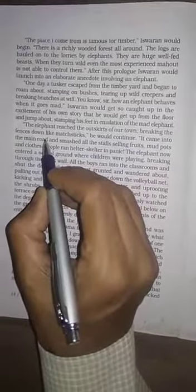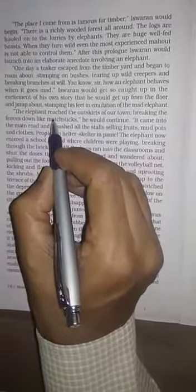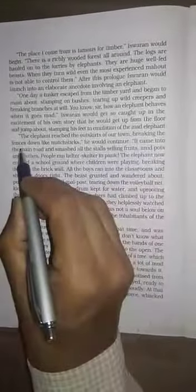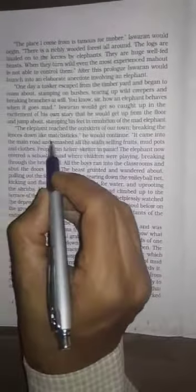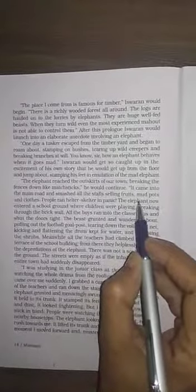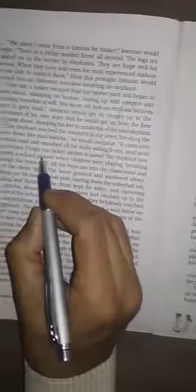Then further he said and continued that the elephant reached the outer escorts, means outer area of the town, breaking the fences, means wall, into small pieces, that is called like matchsticks. Further he also continued, it came into the main road, then the elephant came into the main road, and smashed, means crushed, all the stalls, means shops, the shops there, selling fruits, mud pots, and cloths also. Having seen this situation, people started to run with helter and skelter, and also with fear.